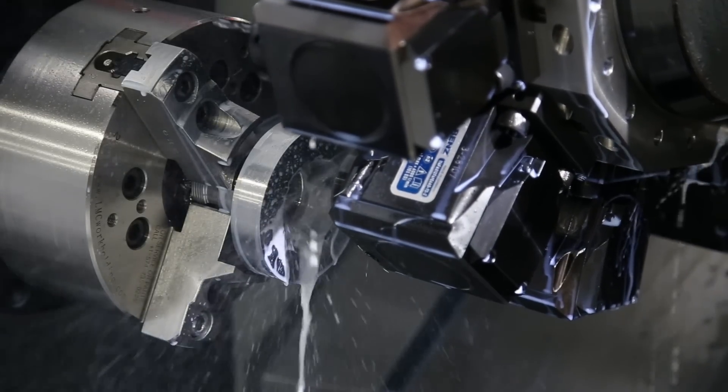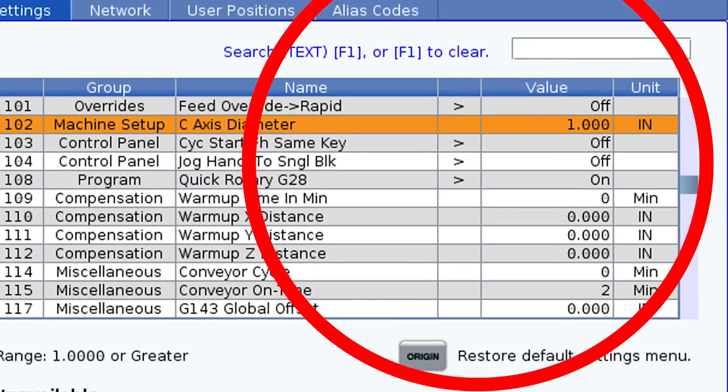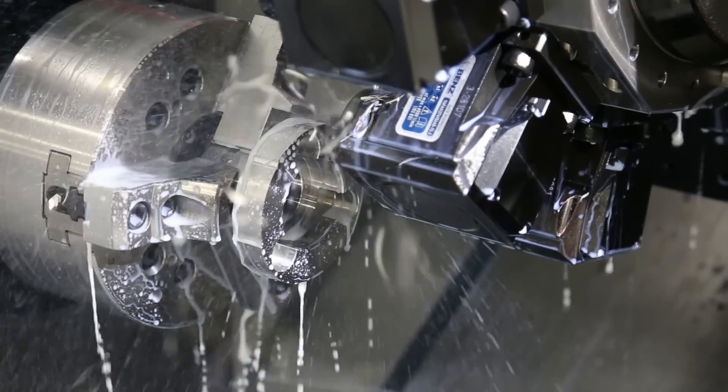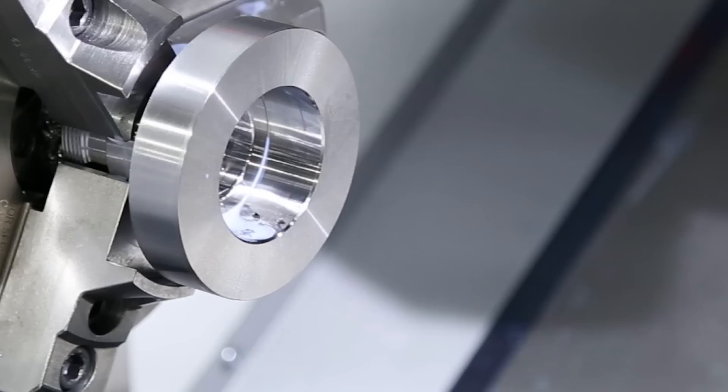When you use live tooling, the control uses the value you enter in setting 102 in its calculation to maintain the proper feed rate commanded by the program. In other words, the control needs to know the diameter of your material so that it can calculate the right feed rate.